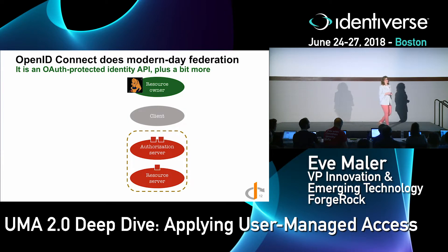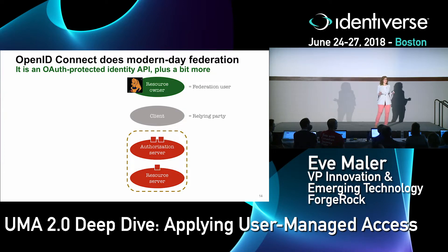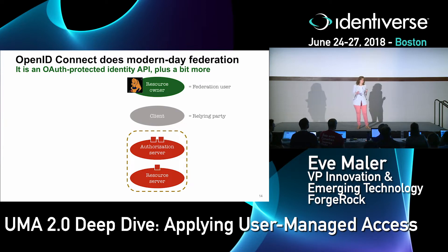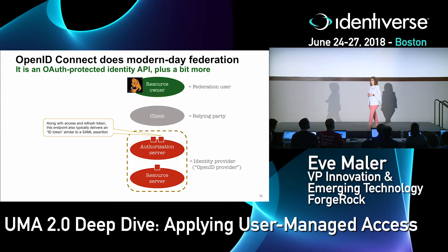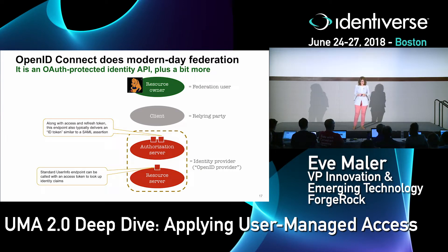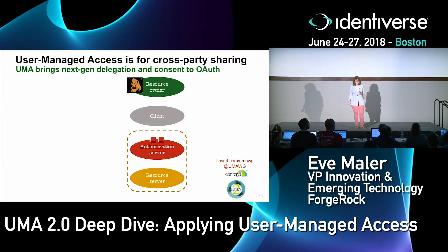OpenID Connect adds an identity layer to OAuth. In the OpenID Connect context, Alice the resource owner is the user of identity federation. The client application is the relying party. The authorization server and resource server are in the same security domain, functioning as the identity provider — the OpenID Provider. The token endpoint gives you an ID token along with an access token, similar to a SAML assertion. The resource server exposes a standard API called UserInfo that gives you identity information.